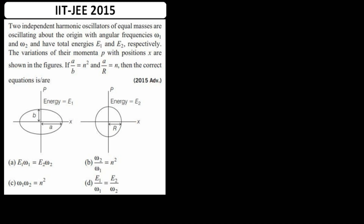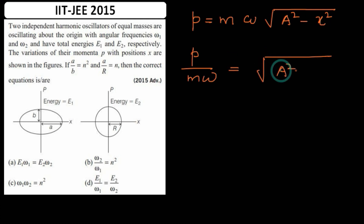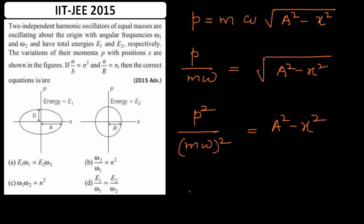The graph appears to be an ellipse, and we will first prove mathematically that it is indeed an ellipse. The momentum of a body at a particular speed is mass times velocity, and the velocity of a simple harmonic oscillator is ω times the square root of (A² − x²), where A is the amplitude and x is the displacement. So we can write p/(mω) = √(A² − x²). Squaring both sides: p²/(mω)² = A² − x².